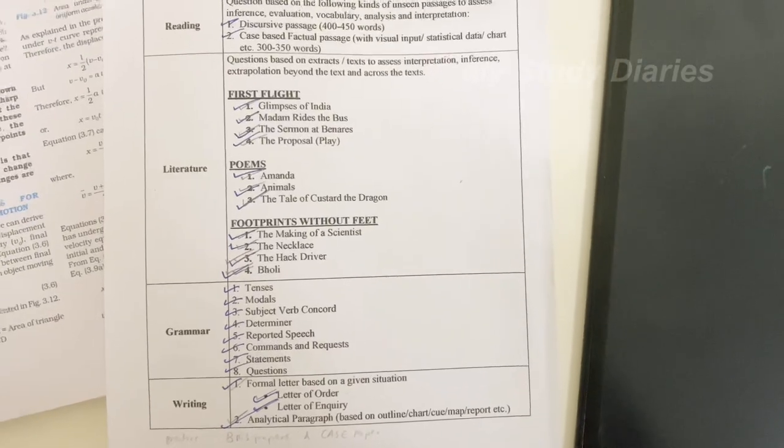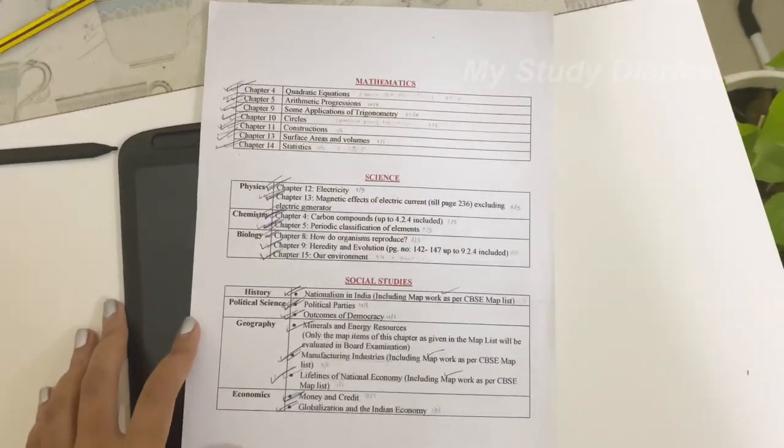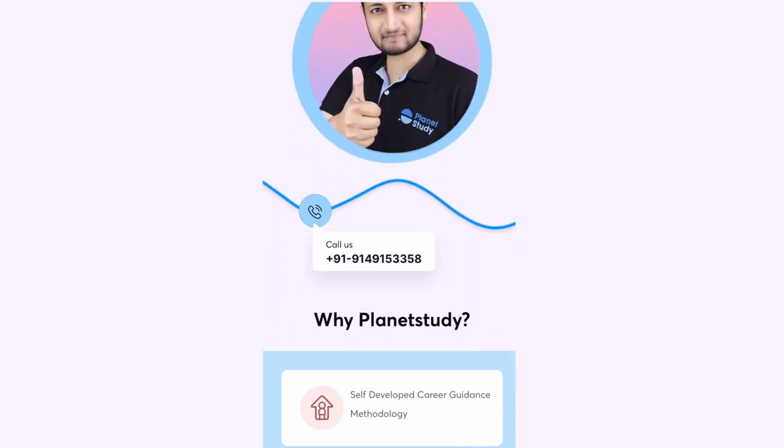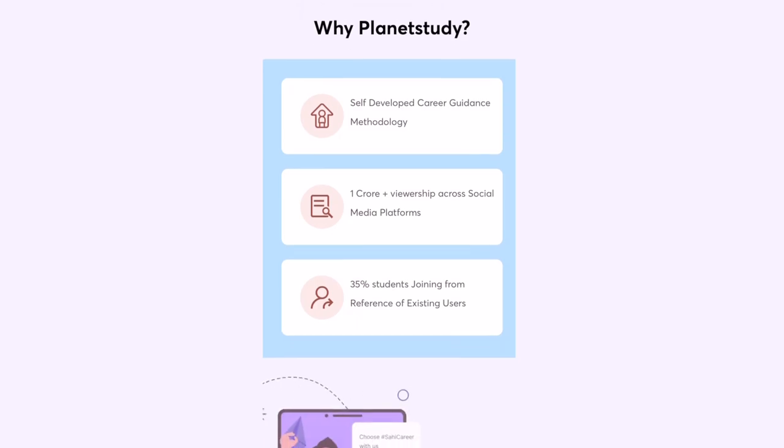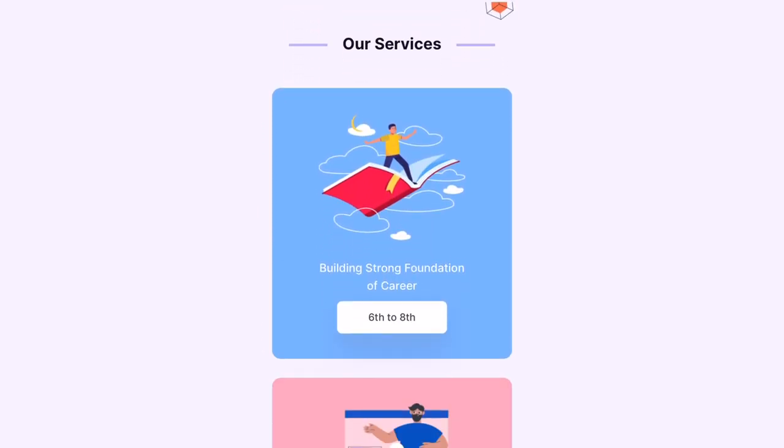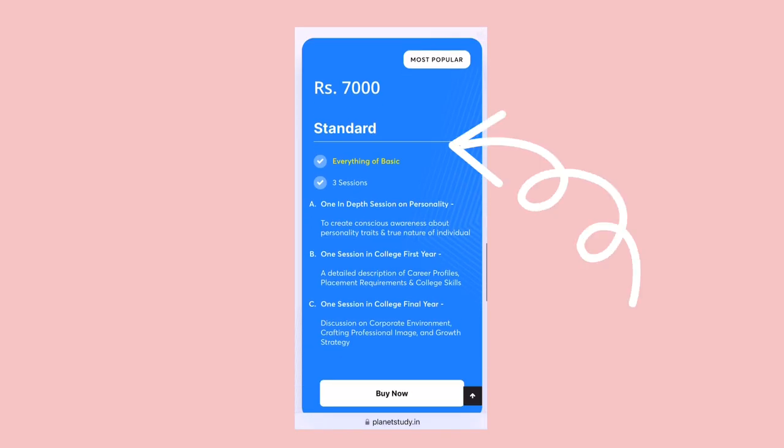With recommendations from friends and influencers, I got to know about the platform Planet Study for career counseling. I checked their website and decided to purchase this 7,000 rupees plan which goes all the way up to college, which is very interesting.